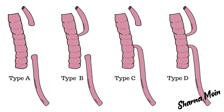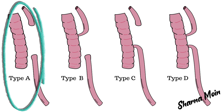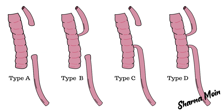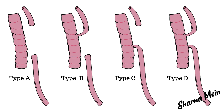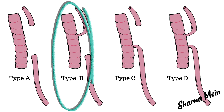There are four types of esophageal atresia: Type A, Type B, Type C, and Type D. Type A is also known as long gap, pure, or isolated esophageal atresia. In this type, the upper and lower parts of the esophagus do not connect and have closed ends, with a long gap between the two blind pouches and no fistula present.